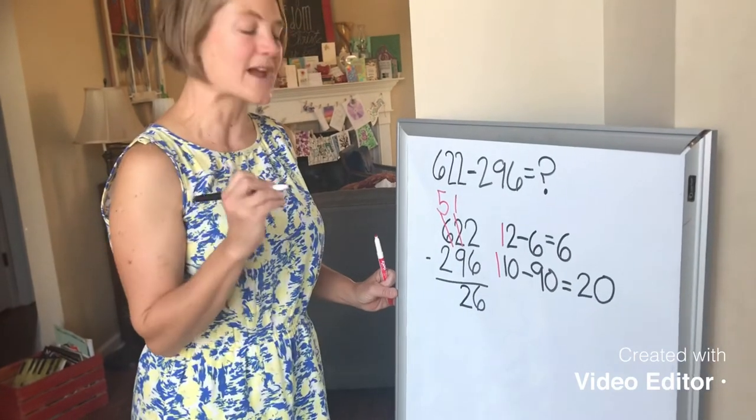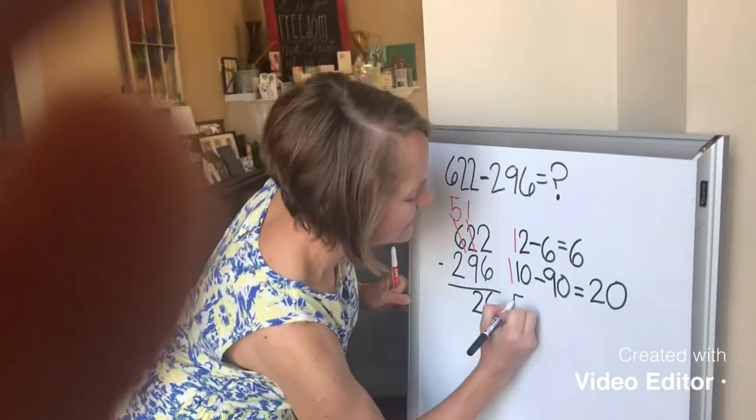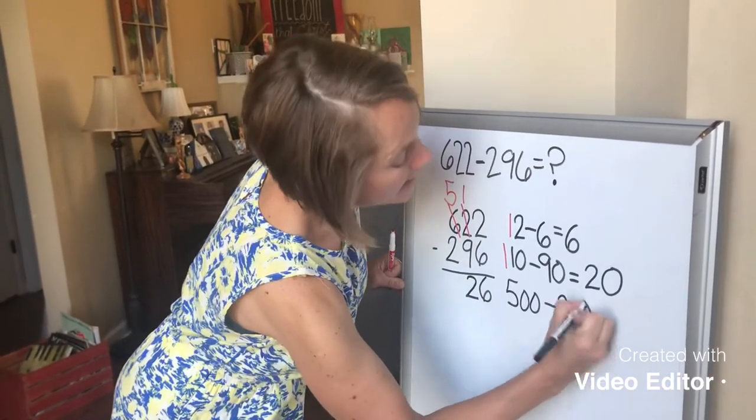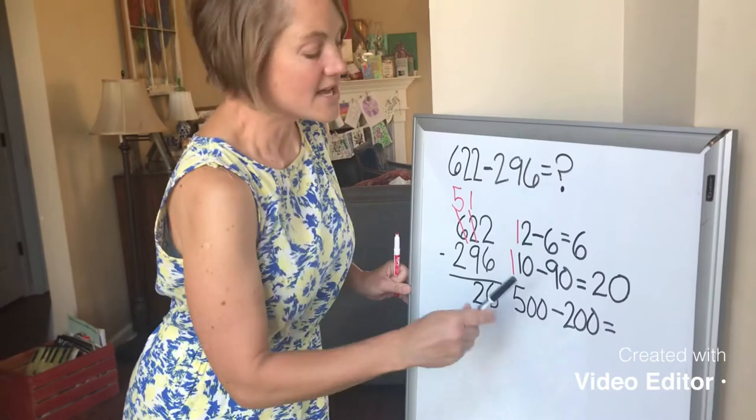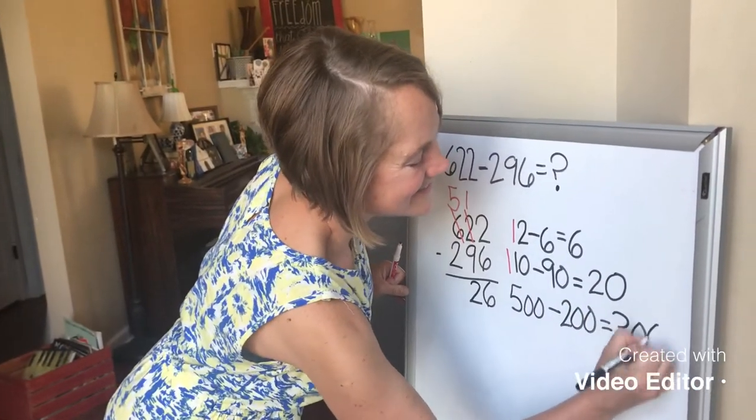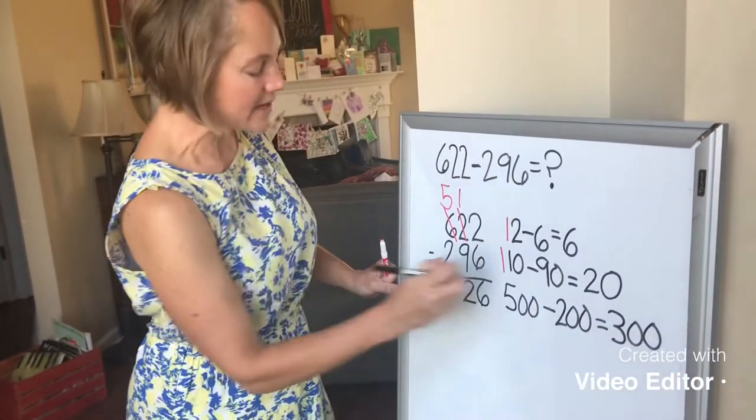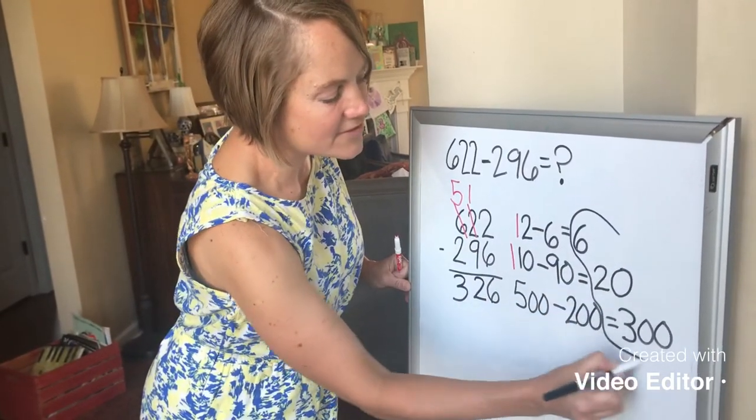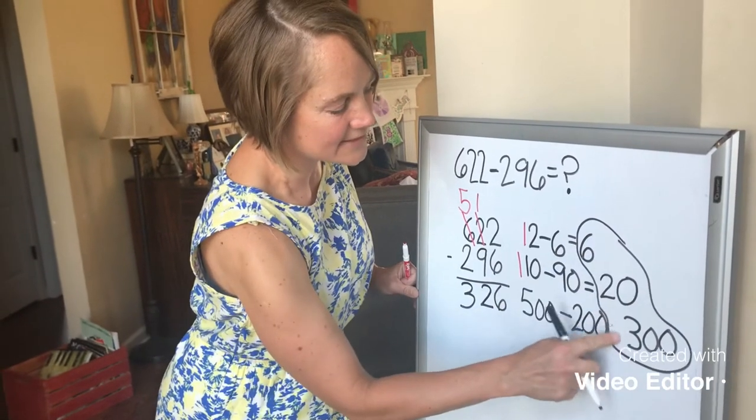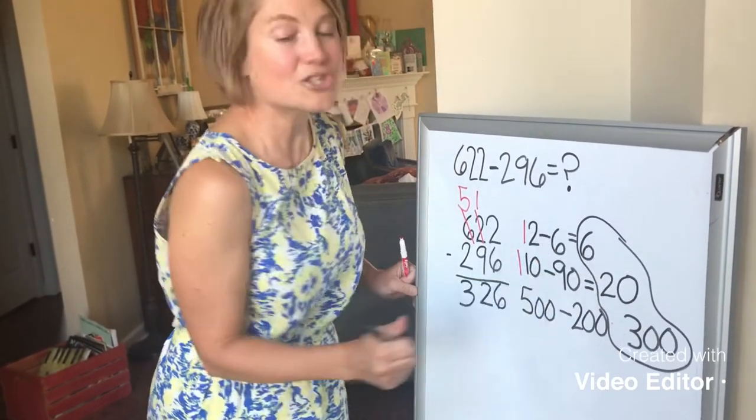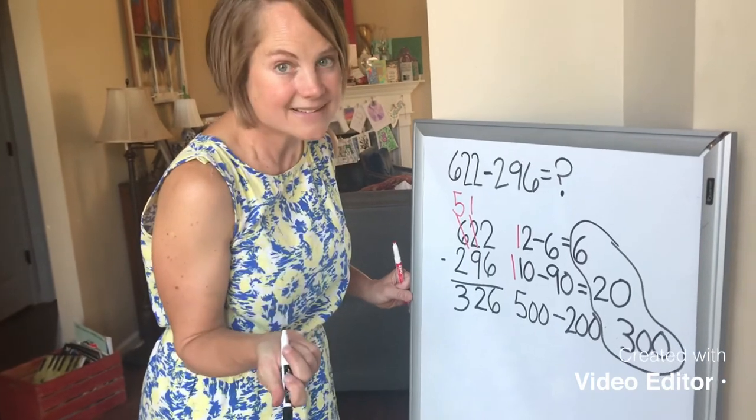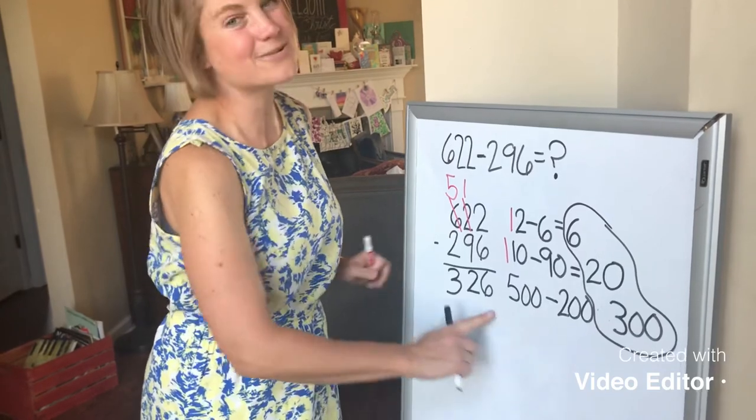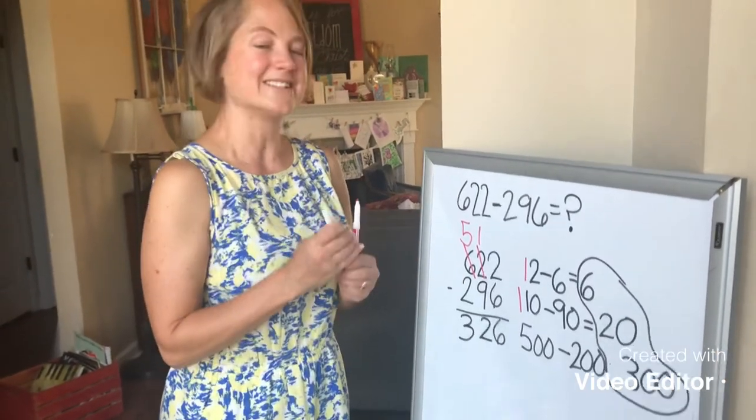And now I can subtract my 100s. I have 500, and I'm going to take away 200. I know 5 minus 2 equals 3. So 500 minus 200 is 300, and the 3 goes right here in the 100s place. And you can see that all of my differences here show the expanded form of our answer. 300 plus 20 plus 6, that's 326. That's the difference. And we're done.